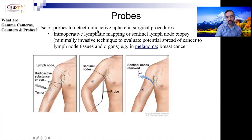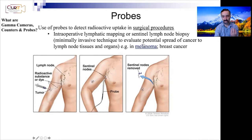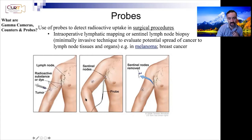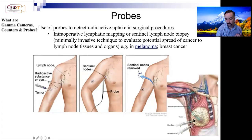Probes are an exciting application especially in surgical procedures. Here's an example for melanoma skin cancer: you've got a tumor and you inject a dye and/or radioactive substance — or both — to help with guidance. This allows you to do sentinel lymph node biopsy. The tumor drains itself into sentinel lymph nodes, which are very important for surgical resection and removal, to minimize spread and understand whether cancer is spreading. The probe allows you to know where those sentinel lymph nodes are and guides the surgical resection.